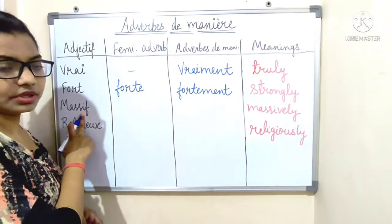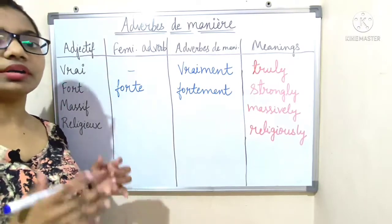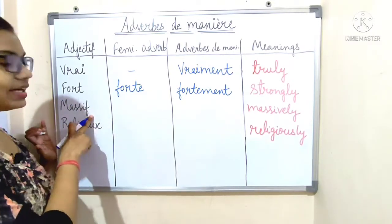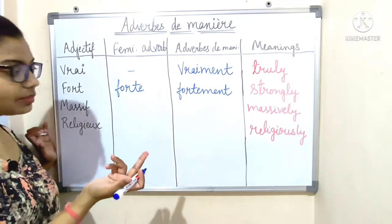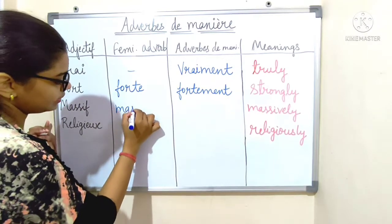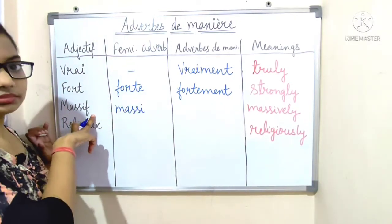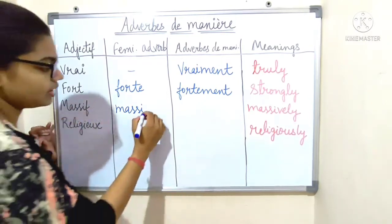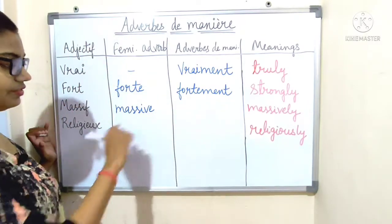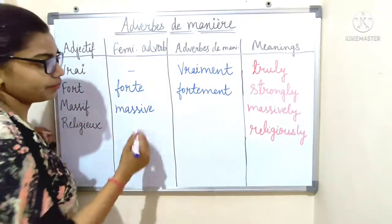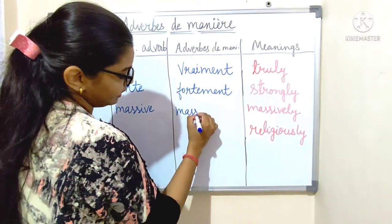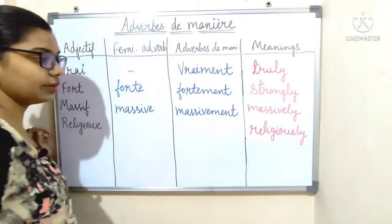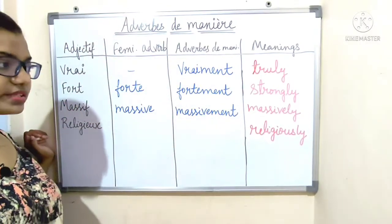Next: 'massif', which means 'massively' or 'largely'. It ends with a consonant, so we make it feminine — we remove F and add V-E: 'massive'. Then add '-ment': 'massivement', which means 'massively'.